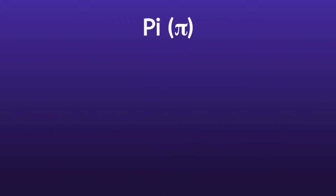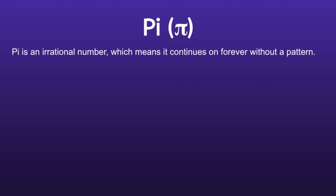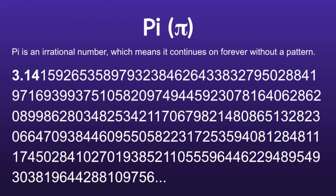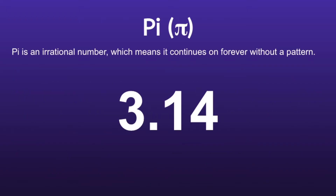Pi is an irrational number, which means it continues on forever without a pattern. So if you were to search up the number pi, you would find 3.141592653589 — and I'm not going to keep going on and on. Instead of using this long irrational number, we're going to use 3.14.